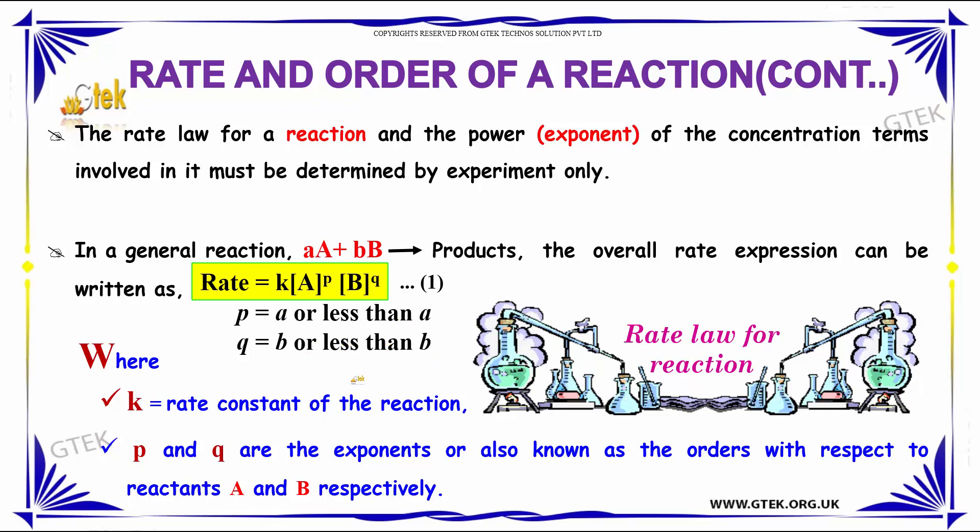Where k is the rate constant, p and q are the exponents or also known as the orders, with respect to the reactants A and B respectively.